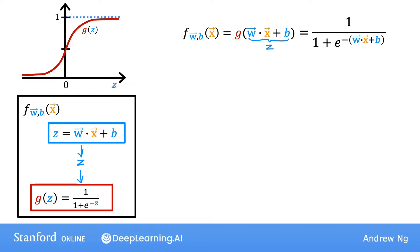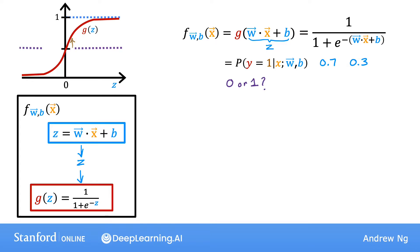We interpret this as the probability that y is equal to 1, given x and with parameters w and b. This is going to be a number like maybe 0.7 or 0.3. Now, what if you want the learning algorithm to predict whether the value of y is going to be 0 or 1? One thing you might do is set a threshold above which you predict y is 1, setting y-hat to 1, and below which y-hat equals 0.